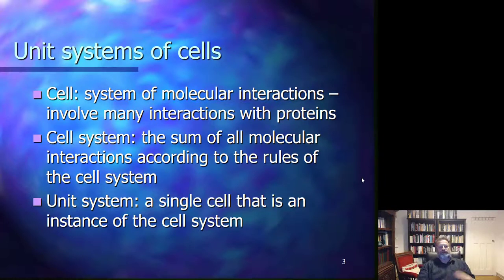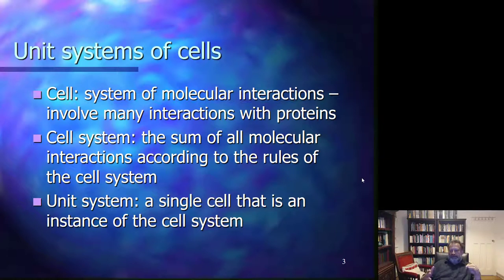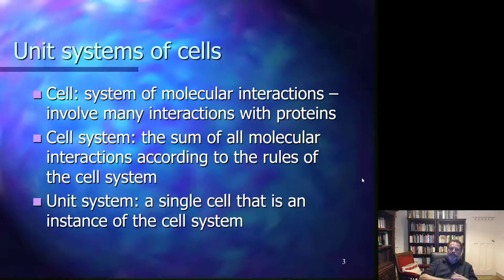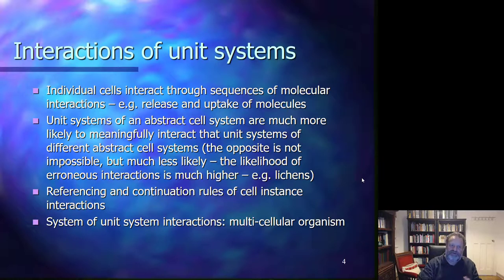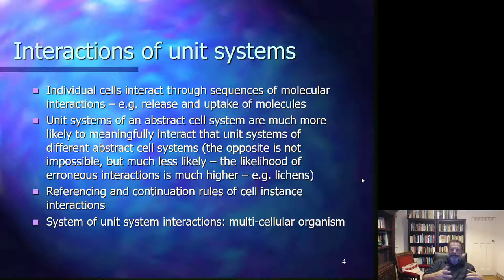To start with, let's reconsider how we see cells. We see the cell system as the system of all molecular interactions that follow the rules of the cell system — the sum of all molecular interactions across all instances of the cell system. The instances of the cell system are the unit systems: the single cells that exist in a finite space and time. Overall, the cell system exists across space and time, potentially infinitely, through individual instances. These individual cells are defined by coherent structural constraints which define the cell membrane, cell wall, and cell matrix around the cell membrane.